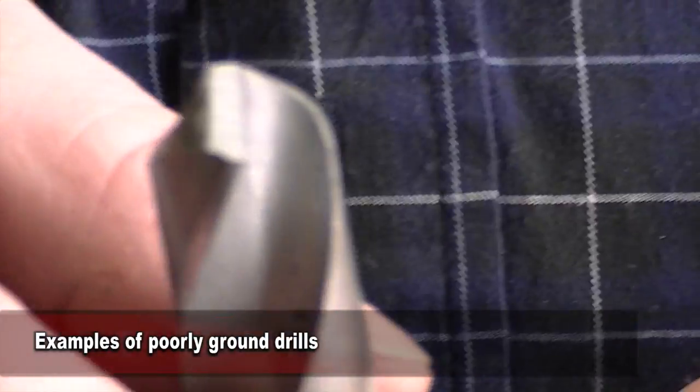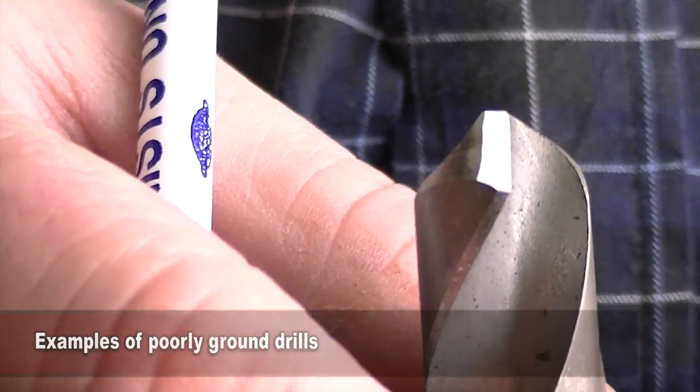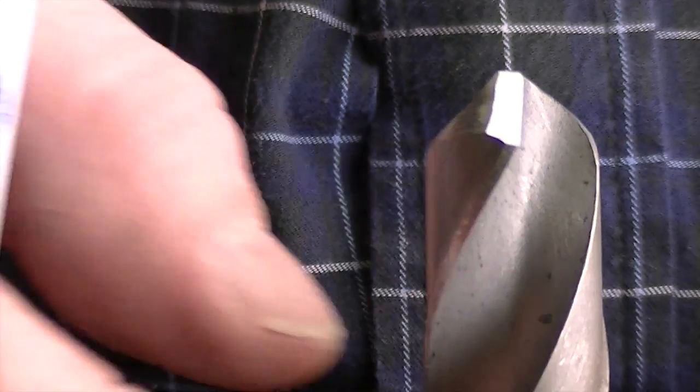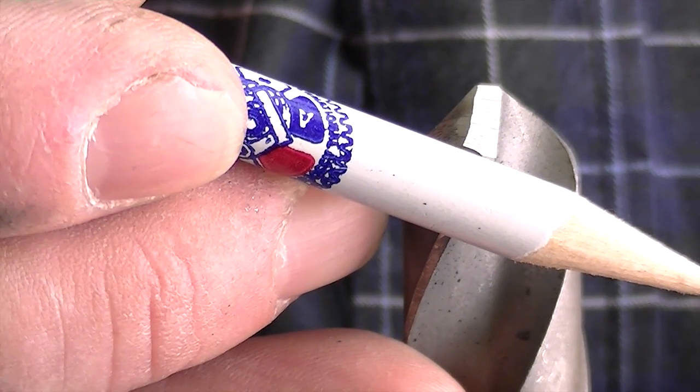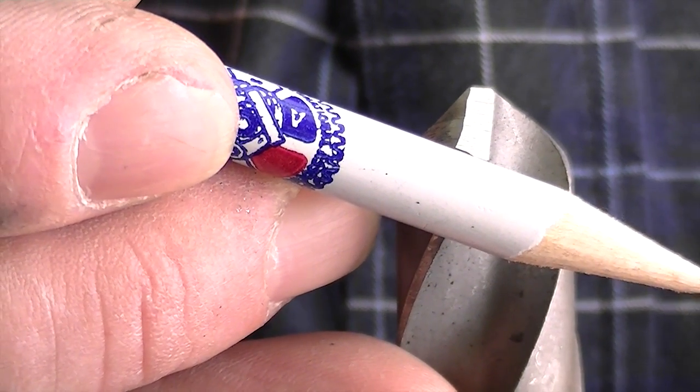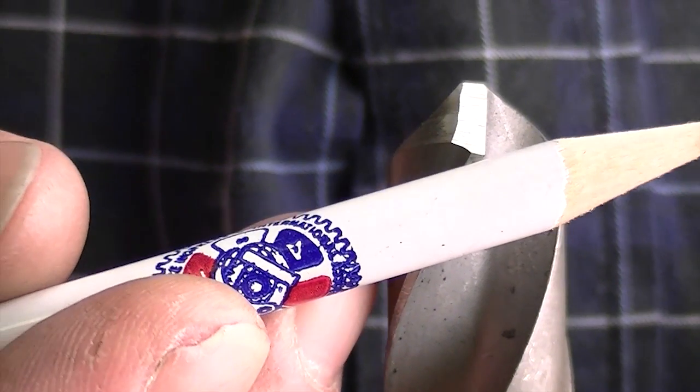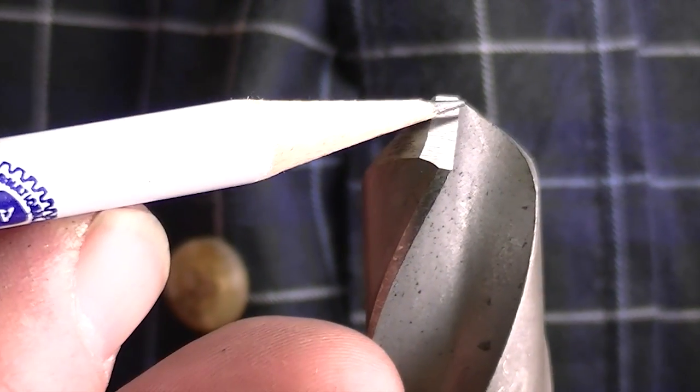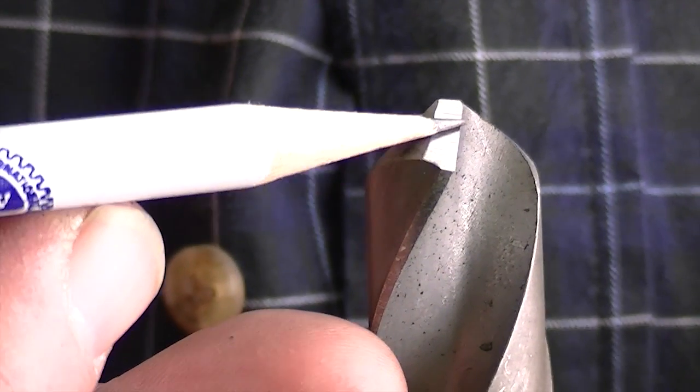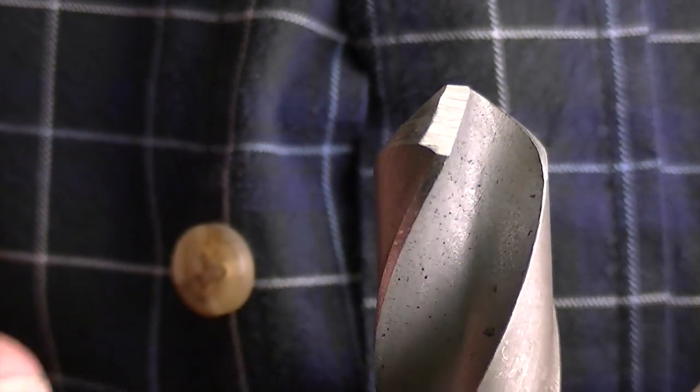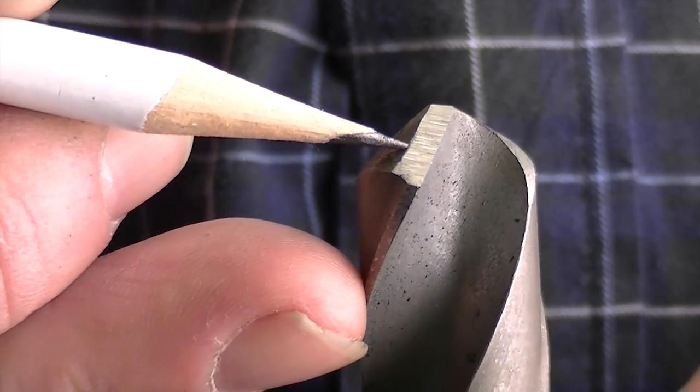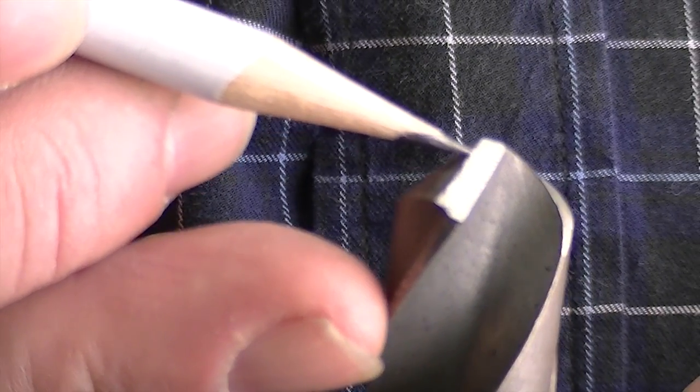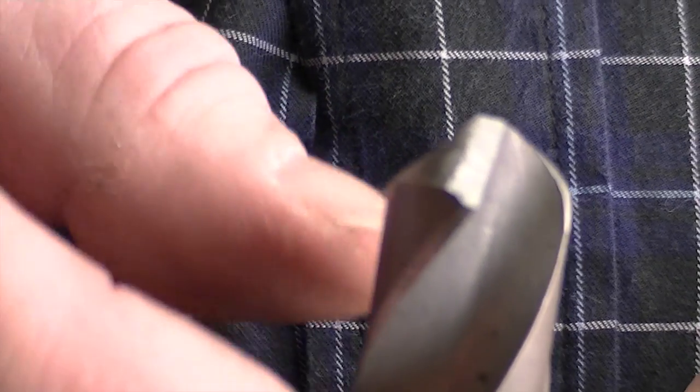This is an example of what not to do when grinding the primary clearance. Notice that it is on an angle in a negative way. This grind should actually be positive so that the cutting lip here can actually enter the material. Right now, if you tried to drill with this, it would hit here and it would never penetrate the material. So let's get a positive angle.